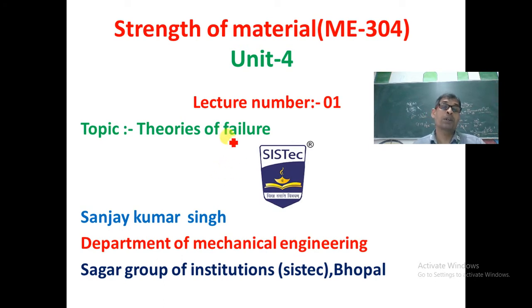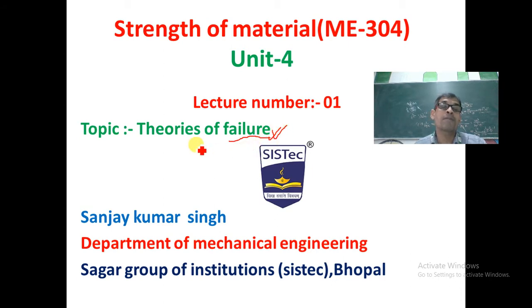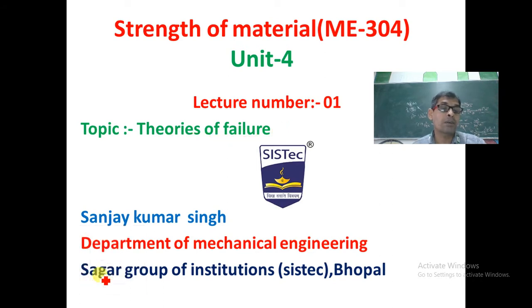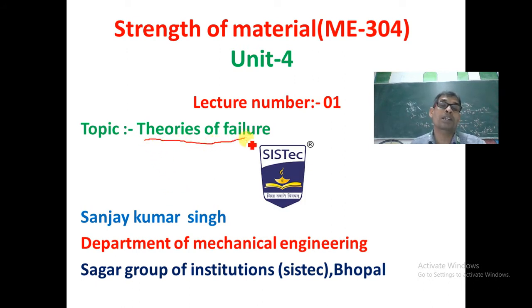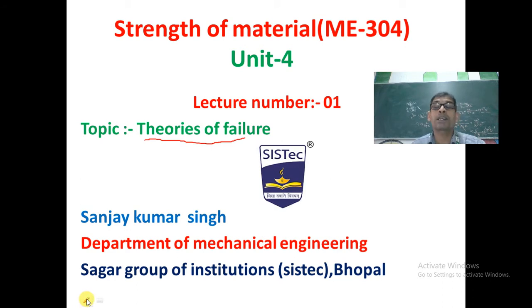Failure means breaking of components into two or more than two pieces. When any metal fails, different people have given their theories, which we read here and call Theories of Failure. In machine design, we design on the basis of theory of failure. This topic is very important from a machine design point of view, and this chapter is the application of material from Unit 1, Unit 2, Unit 3 — when members are subjected to axial loading, bending moment, and twisting moment — so this is a combination of all three.